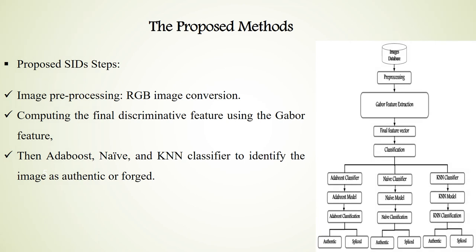The proposed splicing image detection pipeline contains several stages. First is image pre-processing, to convert the RGB image into grayscale. Then, feature extraction using the Gabor filter. Finally, depending on the features extracted, three classifiers are applied: AdaBoost, Naive Bayes, and KNN, to identify the image as either original or forged.